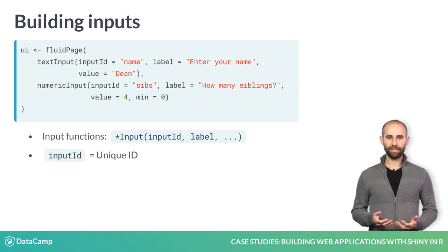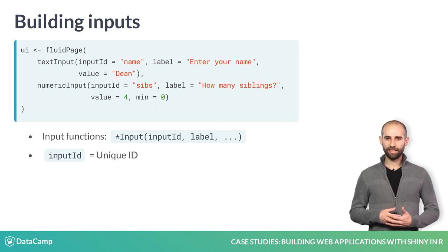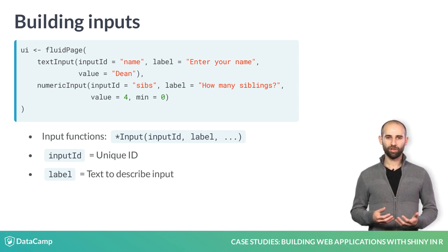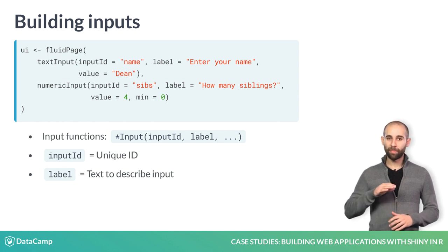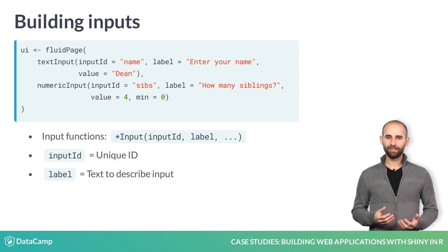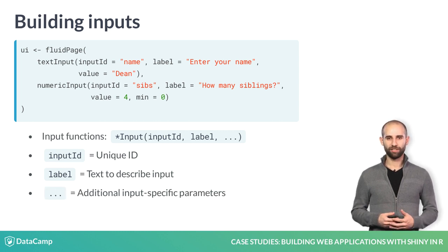The input ID has to be unique, because later on you'll use this ID to retrieve the value of the input. The label argument is the descriptive text that appears above the input. Some inputs can also have other arguments specific to that input type, which we'll see later on.